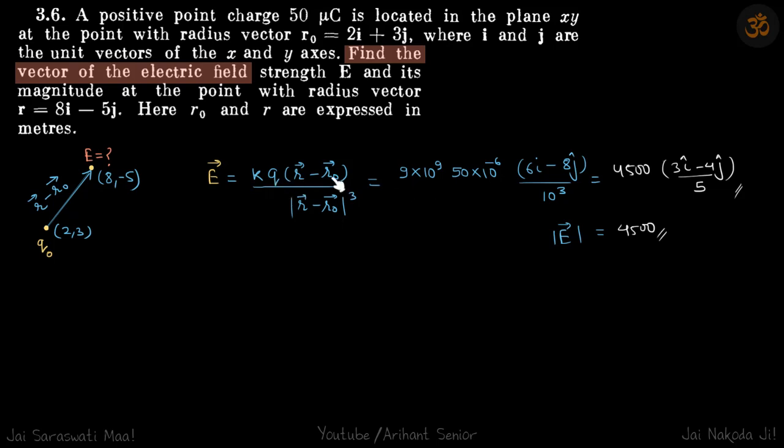We put the values of k, charge q, and r vector minus r0 vector is 6i cap minus 8j cap, divided by its magnitude cubed. The magnitude of this is 10, divided by 10 cubed. This comes to be 4500.